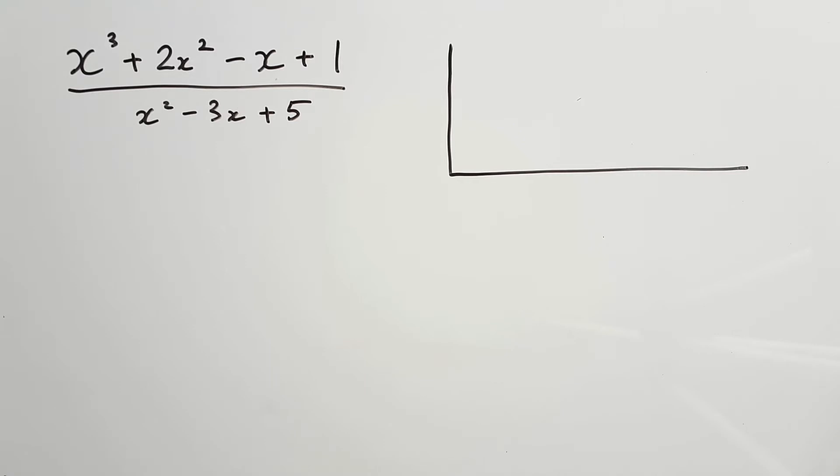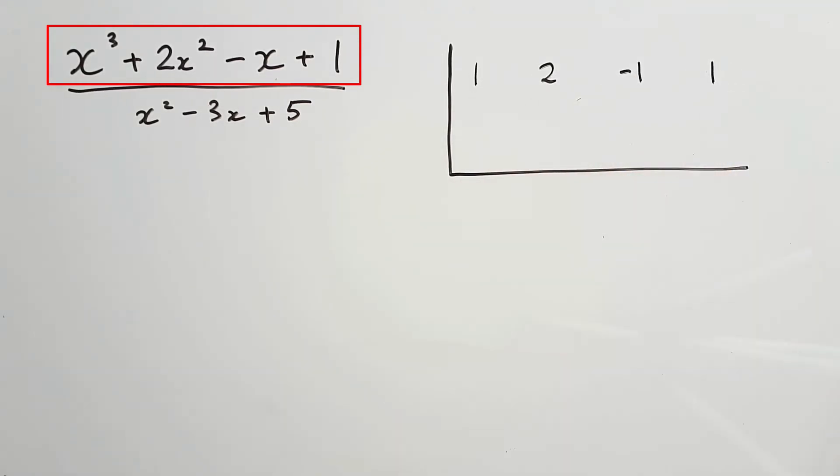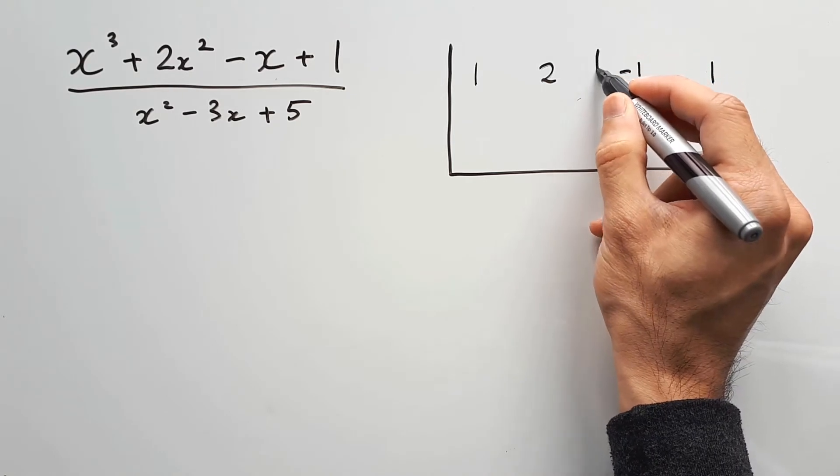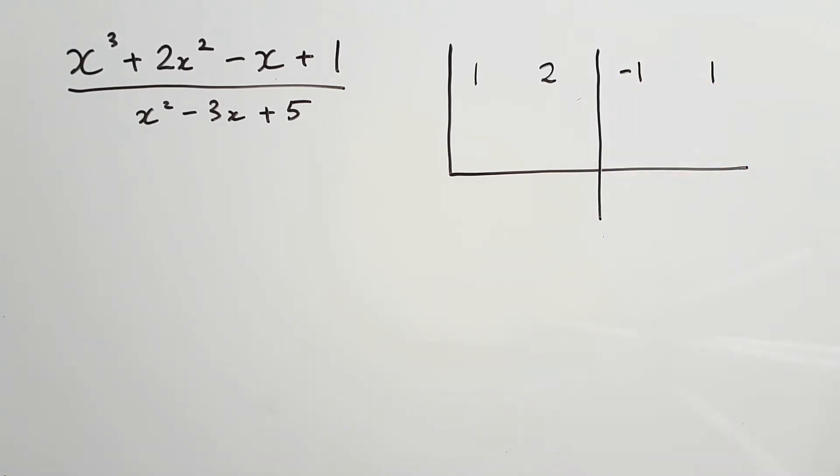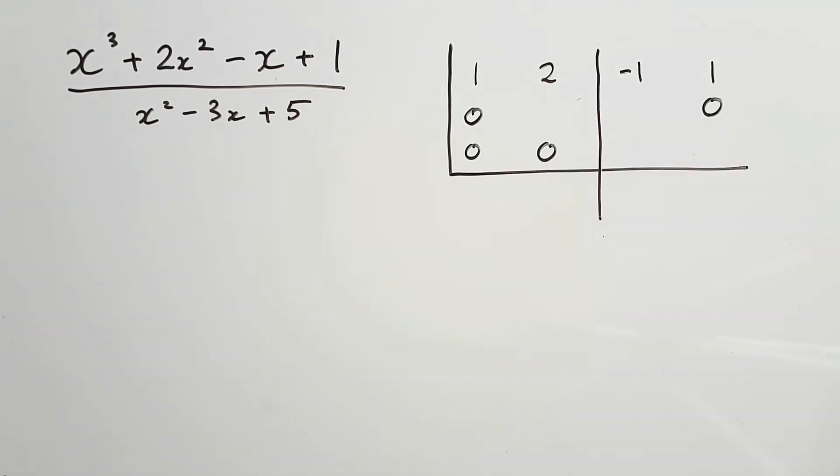On the first row we have our usual suspects, the coefficients of the cubic: 1, positive 2, negative 1, and positive 1. Now because we're dividing by a quadratic, which is a second degree polynomial, or basically with a power of 2, we want to isolate the last two columns, not just the last column. And remember how there's always a zero in the corner? Well this time we have three zeros in the corner to fill up both rows, but one of those zeros needs to be pushed all the way to the end of the second row.